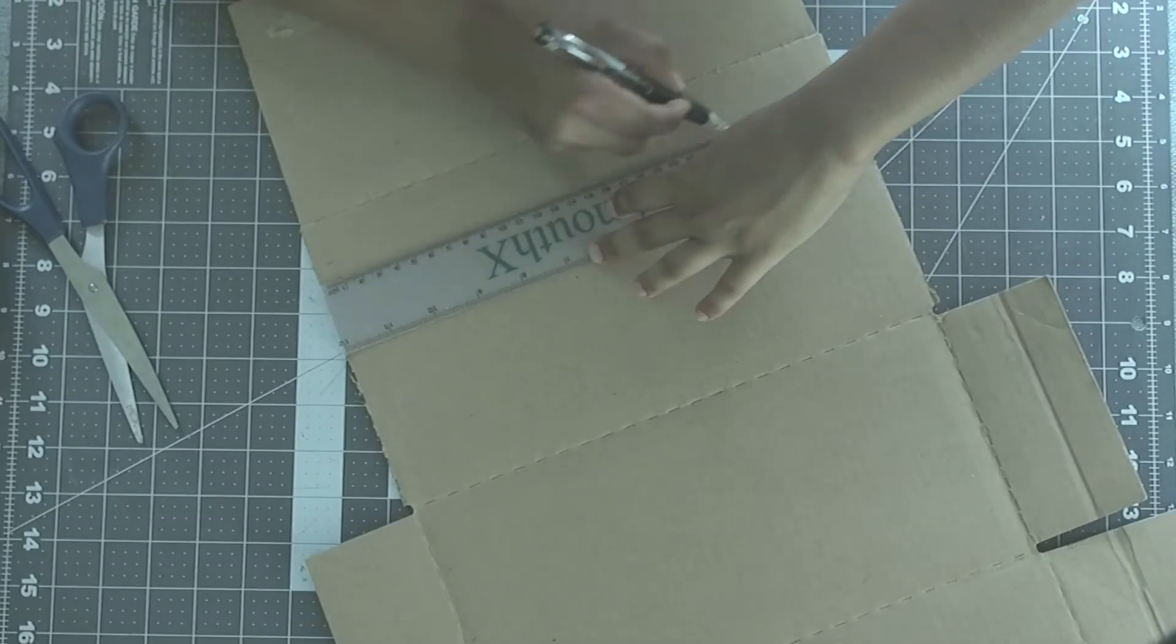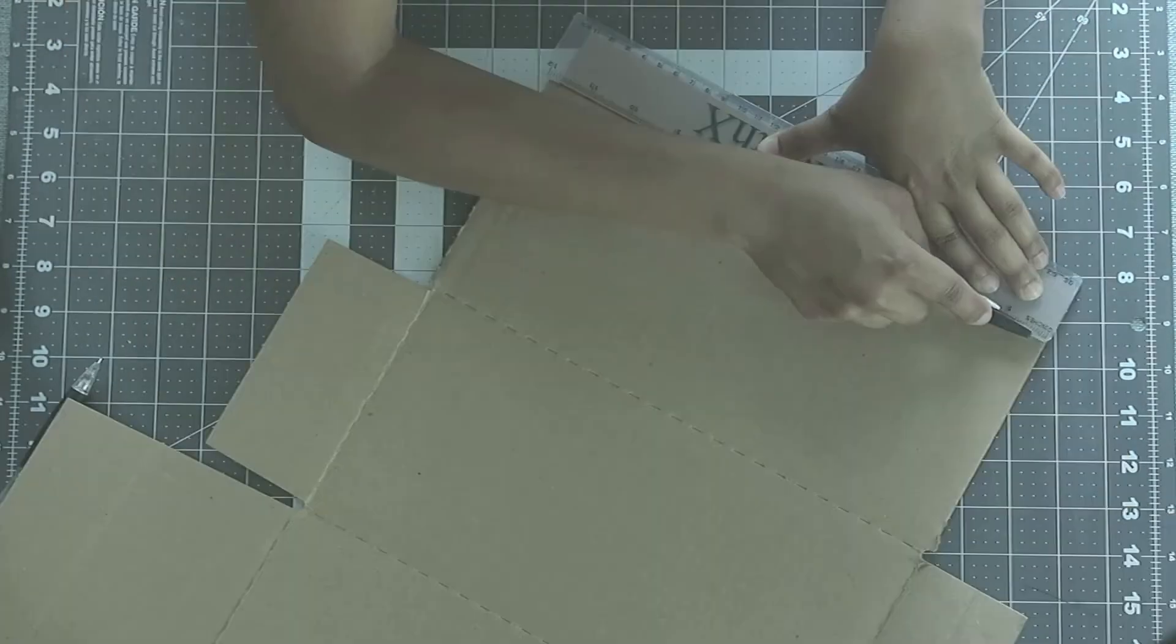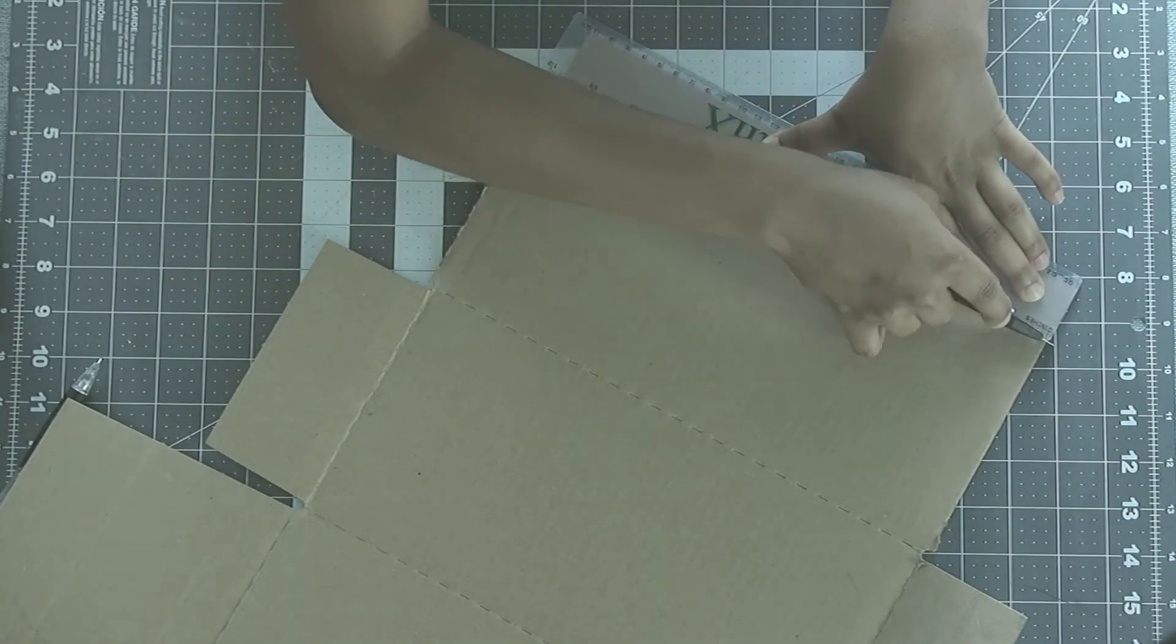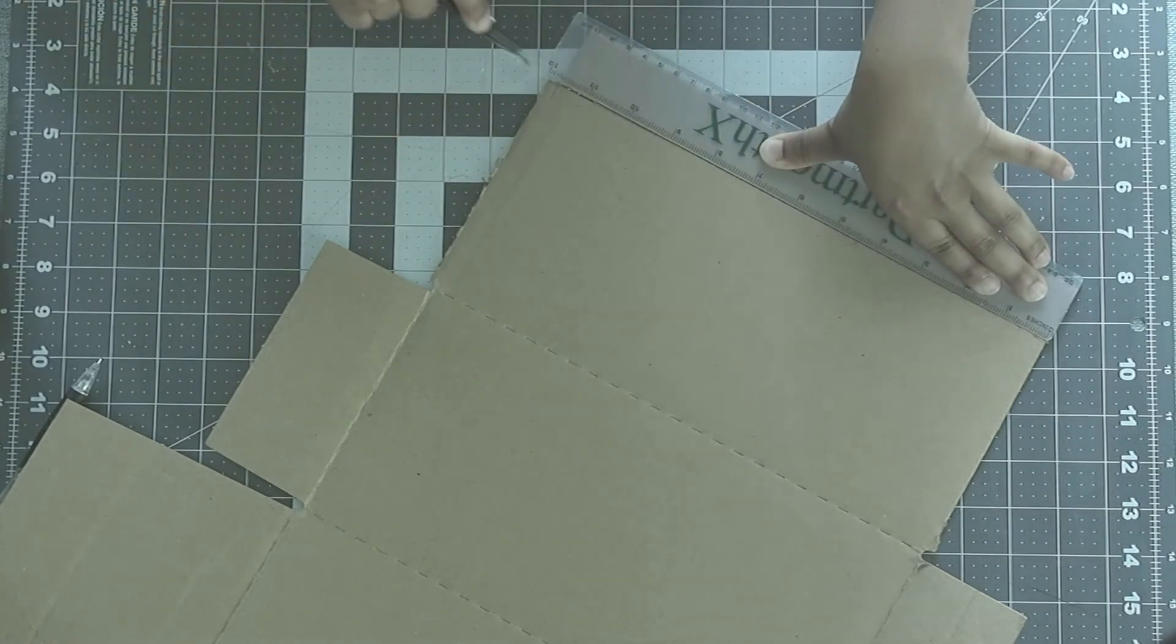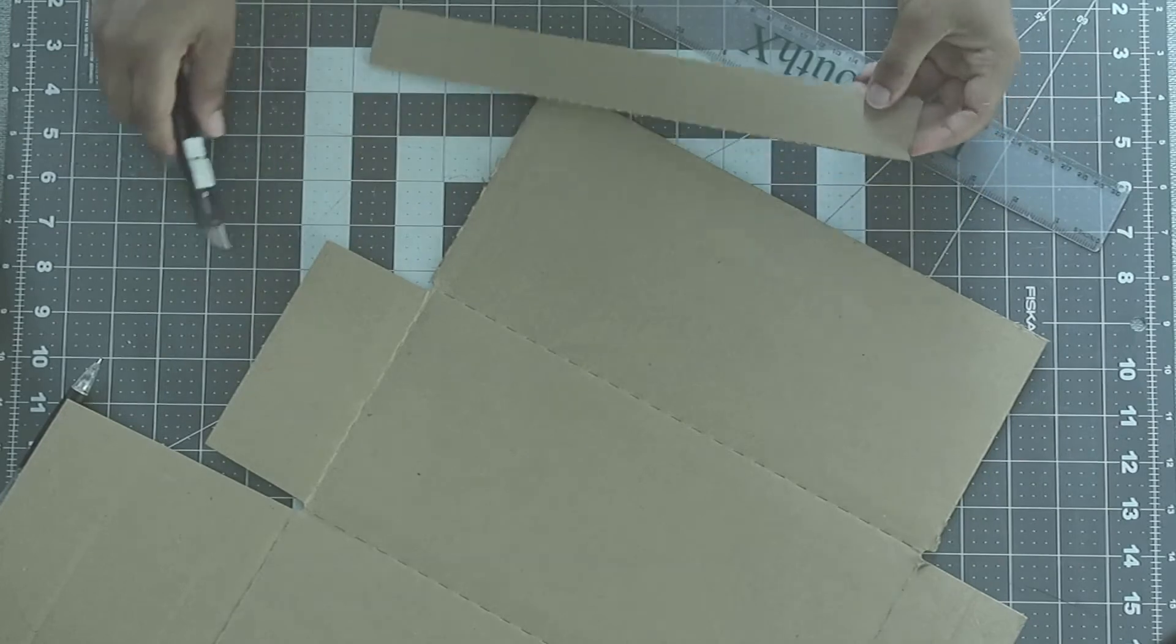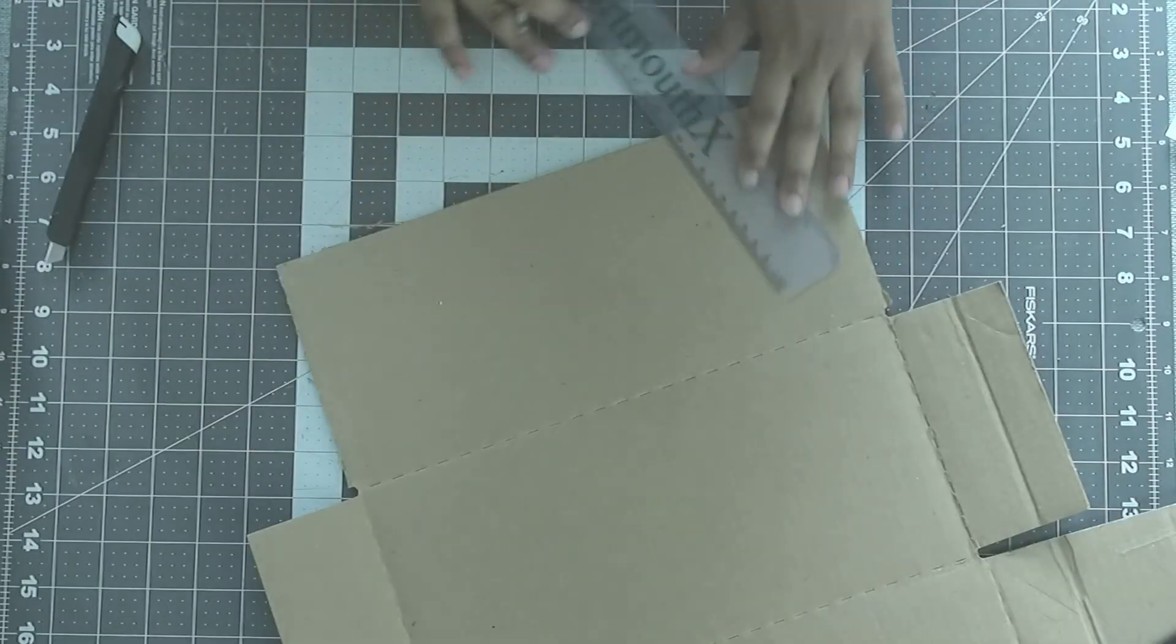Today, we're going to teach you about a basic glider you can make at home using materials you likely already have. You'll need cardboard, paper clips or clay, a ruler, and a box cutter. You can also optionally use some glue to secure the pieces together.